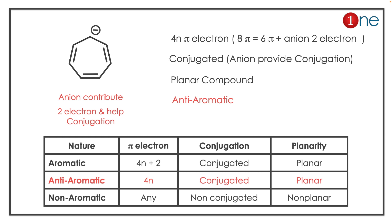Whenever you count, you have to count the anion as two electrons. If you count them up, you will have eight pi electrons. Eight fits the 4n pattern (with n=2), which is anti-aromatic. Because the system also has conjugation and is a planar compound, the given anion is anti-aromatic.